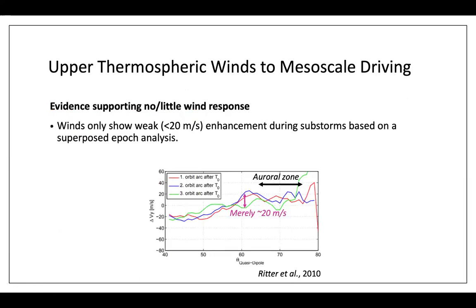Another piece of evidence supporting little or no wind response shows superposed wind perturbation during substorms as measured by CHAMP. As CHAMP orbits, it measures winds across a wide latitude range. The y-axis shows perturbation relative to the pre-substorm value. In all three orbits — the first, second, and third — the wind perturbation is very small, like 20 meters per second, suggesting substorms probably cannot perturb the motion of neutrals much.